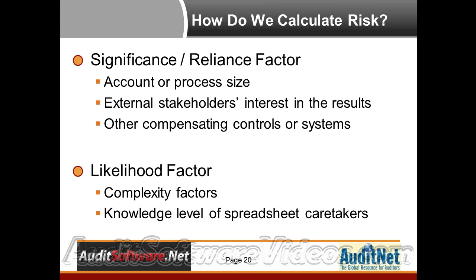That's based more on stakeholder interest. From a likelihood factor, we want to look at complexity within the spreadsheets. When Sam talks about Incisive's product later today, it does a great job of highlighting a lot of these potential things that can go wrong in spreadsheets. It's hard to look at a data sheet and automatically know these cells are wrong — that one's above average, so therefore it's wrong — it doesn't mean it's wrong, it's just above average. Complexity comes in when you start looking more at the formulas and the way you've built the spreadsheet and how you're linking things together.